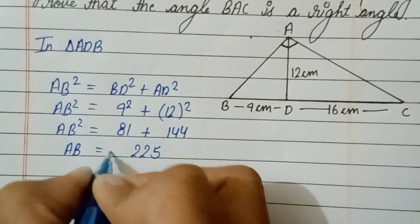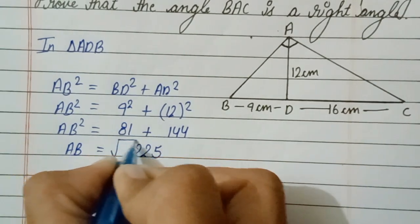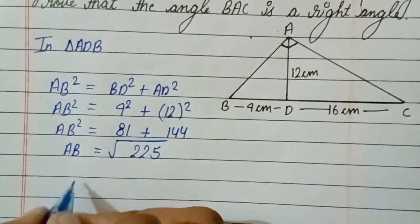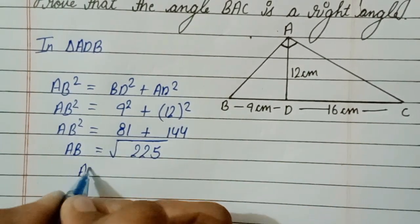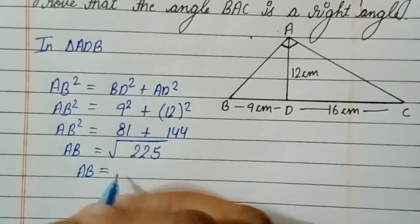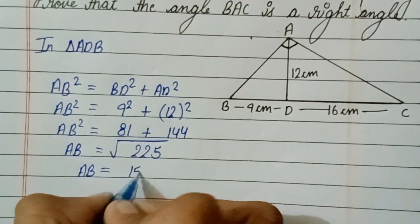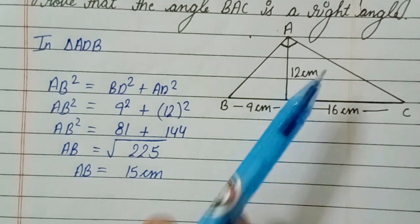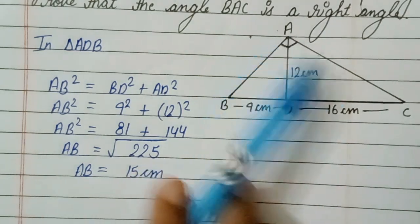AB square equals 225, so AB equals root of 225, which gives AB equals 15 centimeters.